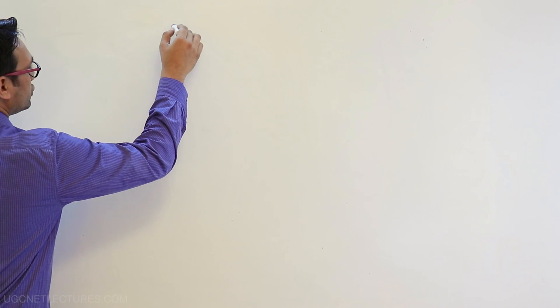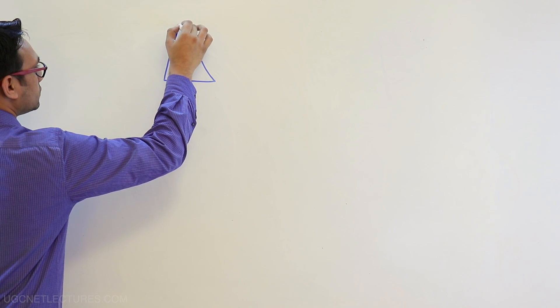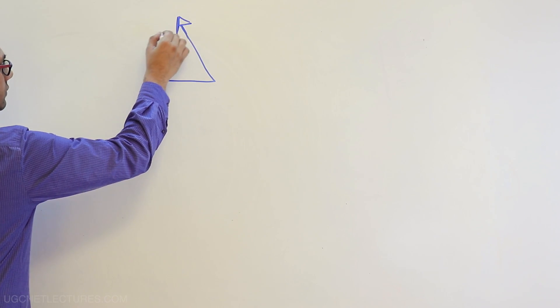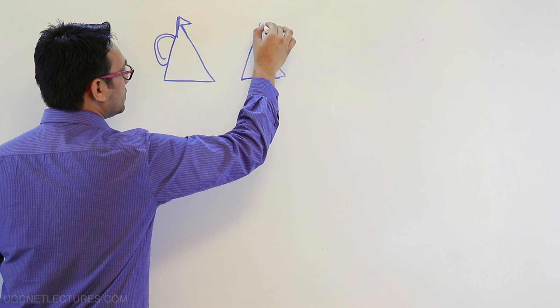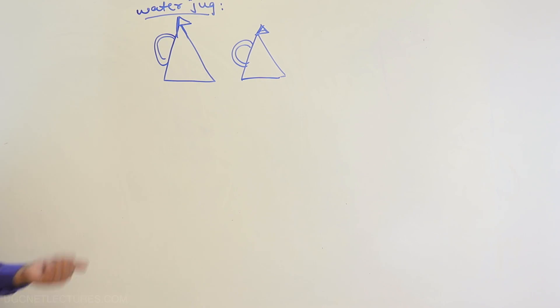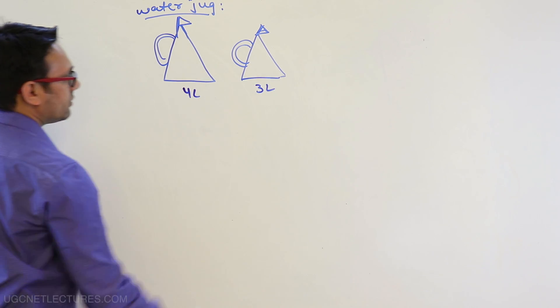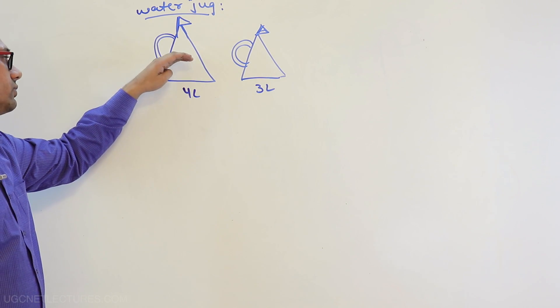The next problem is the Water Jug Problem. We have two jugs here — the first jug and the second jug. The size of the second jug is bigger than the first. The first jug has a capacity of four liters and the second jug has a capacity of three liters. There are no markings on these jugs showing how many liters of water are inside.